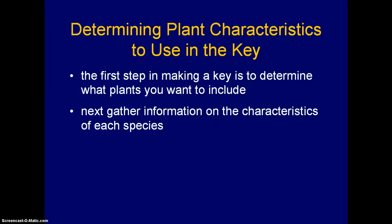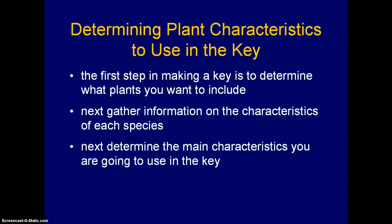The next step is to gather information on the characteristics of each species you want to put in your key. You have to find this in various sources such as books, the internet, CD-ROMs, and course materials. But even once you've gathered information on the characteristics of the species, you have to determine what characteristics you actually want to include in your key. You can't include them all and you don't need to. You should include those characteristics which work best to differentiate the different species.